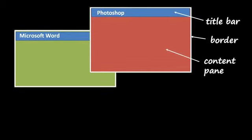Each window has three basic components. At the top you have the title bar, where it says the name of the program. You have a border around the window, and then you have the content pane — the space where the actual program interface is displayed. Whatever the program wishes to show the user, it gets displayed in the content pane.